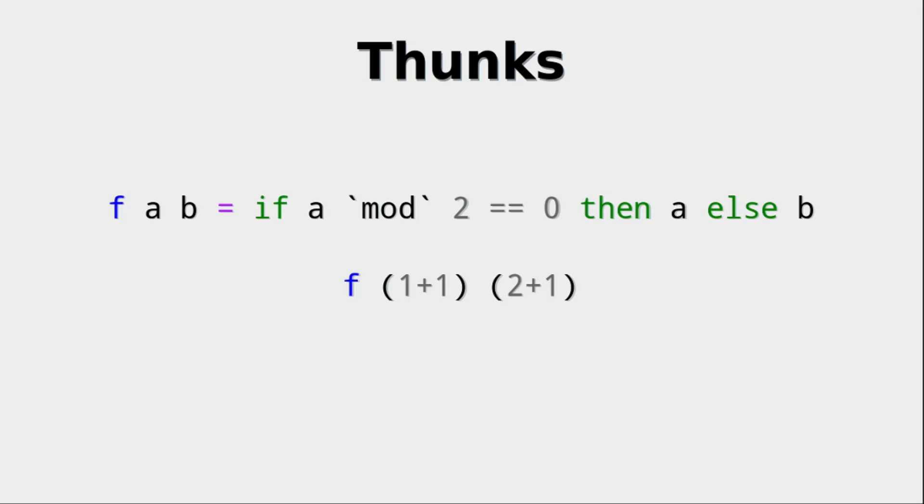And let's assume that the value that f returns has to be evaluated because it may be the last value that Haskell needs to evaluate. So let's say we have a function call f with 1 plus 1 and 2 plus 1 and those are not evaluated right away but stored as thunks.